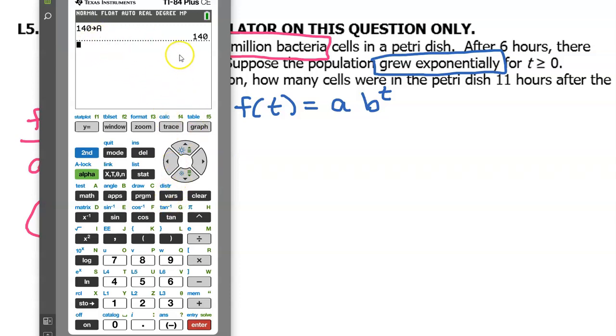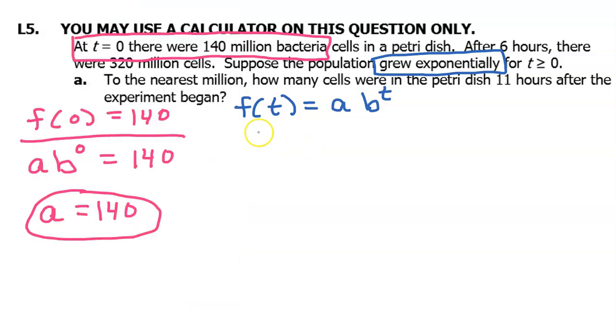By the way, if you're just not confident that the 140 truly got stored for a, here's how you check it real quick. Do alpha a, and then hit enter. And it's telling you, yep, a is 140, all right. Okay, let's move on to the next part.